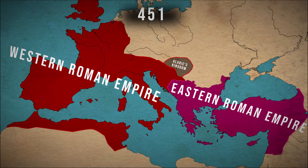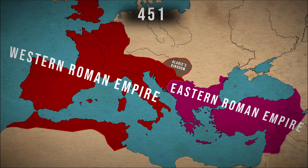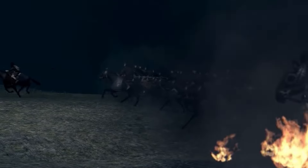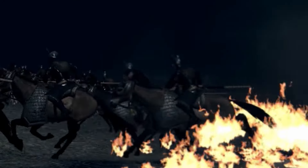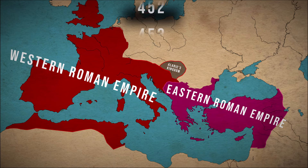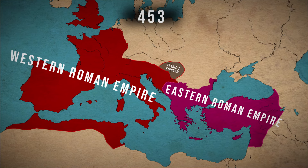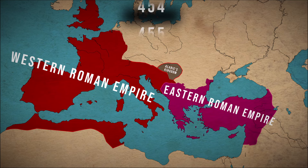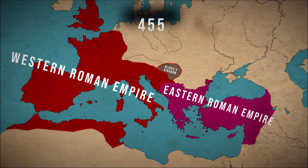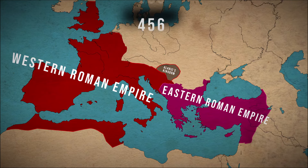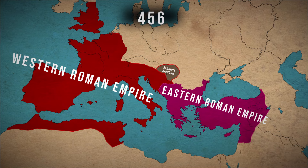Attila the Hun is defeated more decisively at the Battle of the Catalonian Plains due to superior coordination between the Roman forces and their Gothic allies. Emperor Majorian enacts sweeping reforms, successfully reducing corruption and restoring Roman infrastructure. His reign stabilizes the empire. The Vandals fail to sack Rome after being repelled by a reorganized navy.